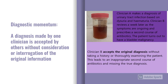Diagnostic momentum is where a diagnosis made by one clinician is accepted as correct without looking at the original information used to create that diagnosis. For example, clinician A makes a diagnosis of UTI after seeing a patient with dysuria and haematuria and gives antibiotics. Clinician B returns later — symptoms are ongoing, antibiotics haven't worked — and accepts the original diagnosis without thoroughly assessing the patient, prescribing a second course of antibiotics. In doing so, they miss that the haematuria is actually due to bladder malignancy.